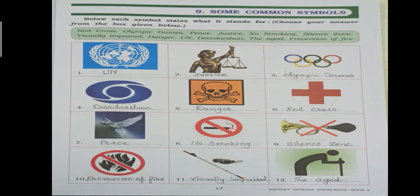Seventh symbol of Peace. Eighth symbol of No Smoking। देखें, जहां पर smoking नहीं करना है वहां पर ऐसा symbol लगा हुआ होता है — कि यहां पर smoking allowed नहीं है। So वहां पर ऐसा symbol बना दिया जाता है और लिखा जाता है No Smoking।